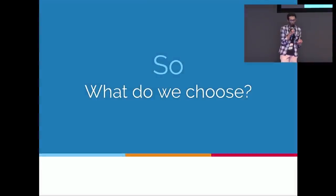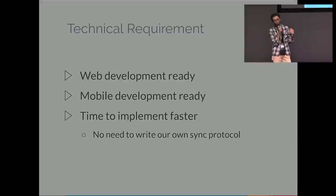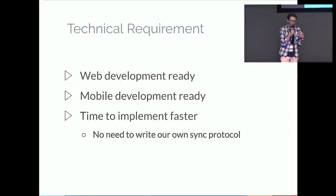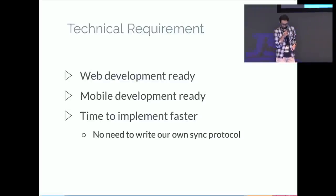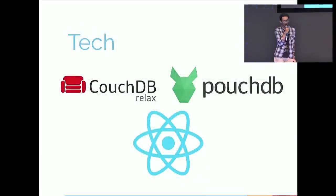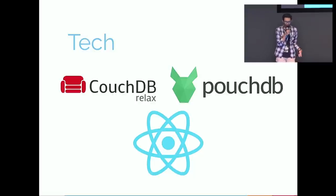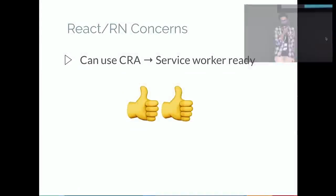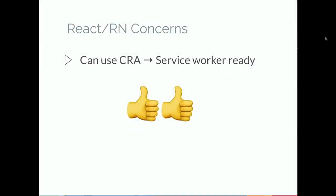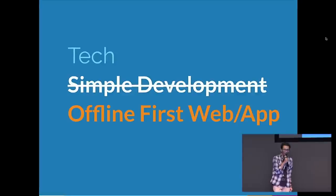So what do we choose? As software developers, we need: web development ready, mobile development ready, and faster time to implement. We chose CouchDB and PouchDB with React. Why React? Because we are familiar with React and React Native. And React already has service worker support implemented — you just remove two words, change 'unregister' to 'register,' and you've got an offline-first web app. But it's not simple development — we have a lot of boilerplating and have to make a lot of abstraction with CouchDB and PouchDB.